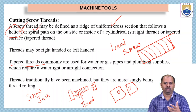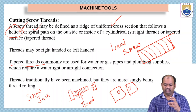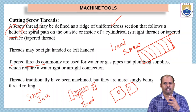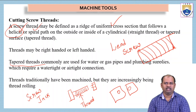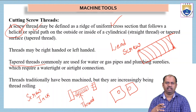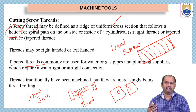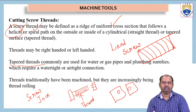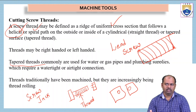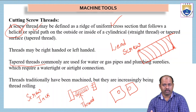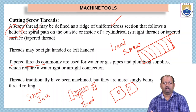Threads have traditionally been machined but they are increasingly being formed by thread rolling. In older times, a cylindrical bar was taken and threads were cut on a lathe machine. But nowadays, the thread cutting process on a lathe machine is very hard — it requires a skilled operator. That is why a new technique, thread rolling, is being done where thread rolling itself is done on the rolling machine while manufacturing or forging.